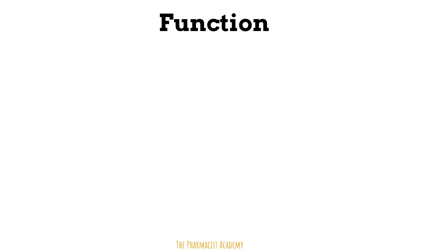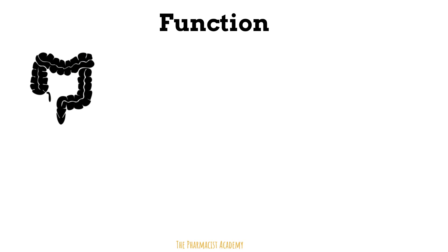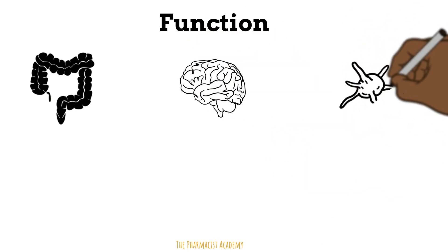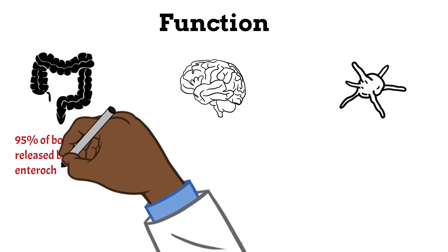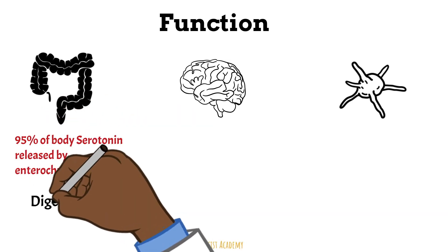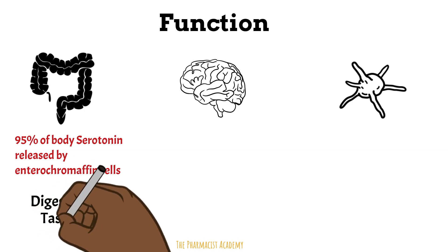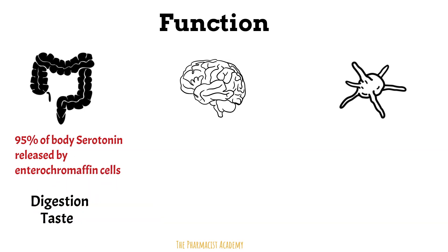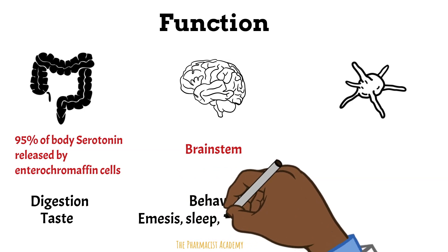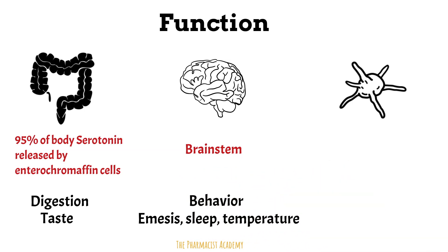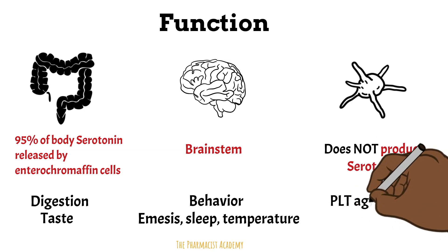The three most common places serotonin works are in the GI tract, the CNS, and in platelets. Majority of the serotonin is released by the enterochromaffin cells in the GI to help with digestion. Even before food gets into the intestines, serotonin sends messages to your brain about the food that entered your mouth. In the CNS, most serotonin is found in the brainstem, where it controls human behavior, emesis, sleep, and body temperature regulation. In platelets, serotonin is simply stored — platelets do not produce serotonin — and its main function there is to aid with platelet aggregation.